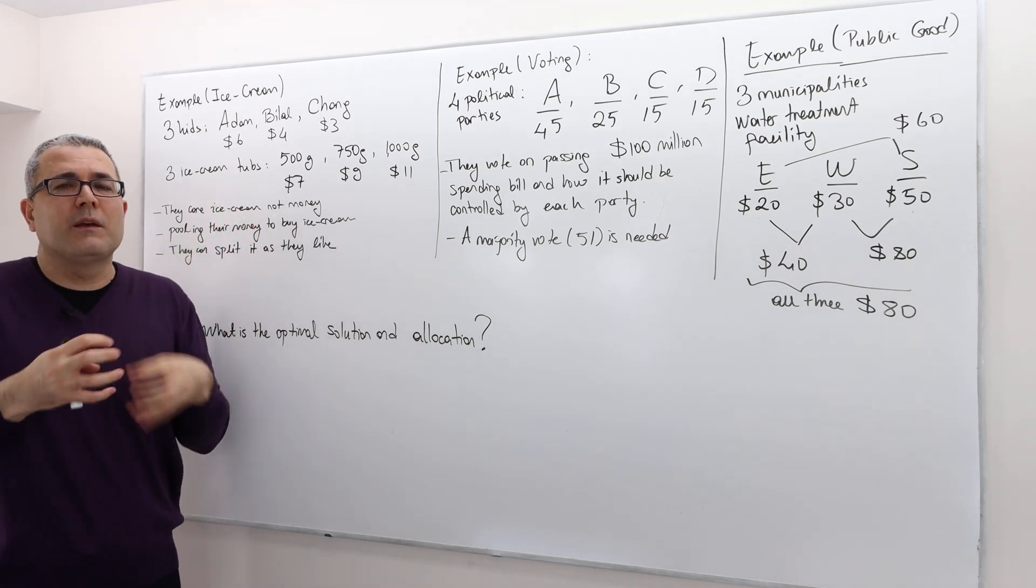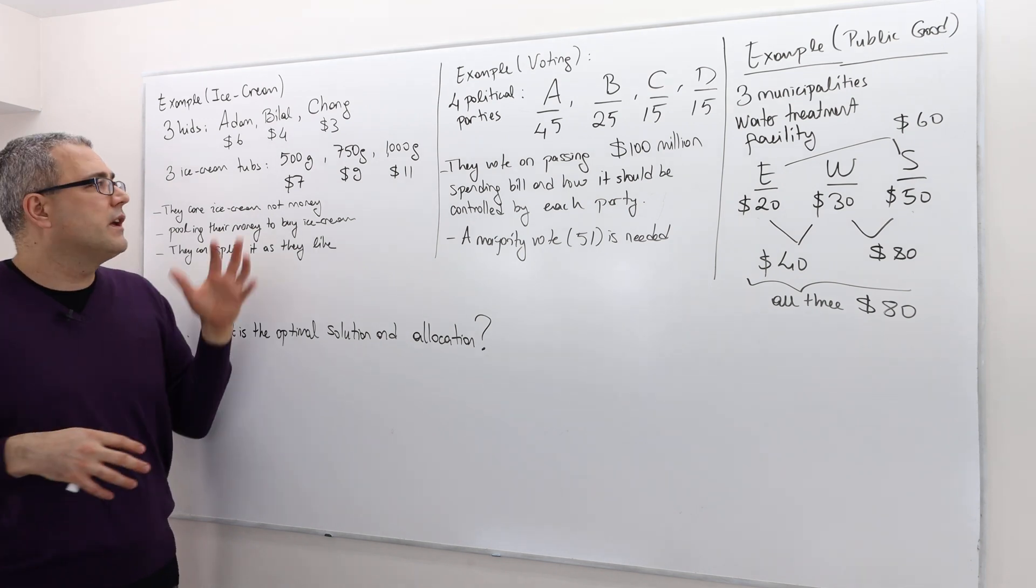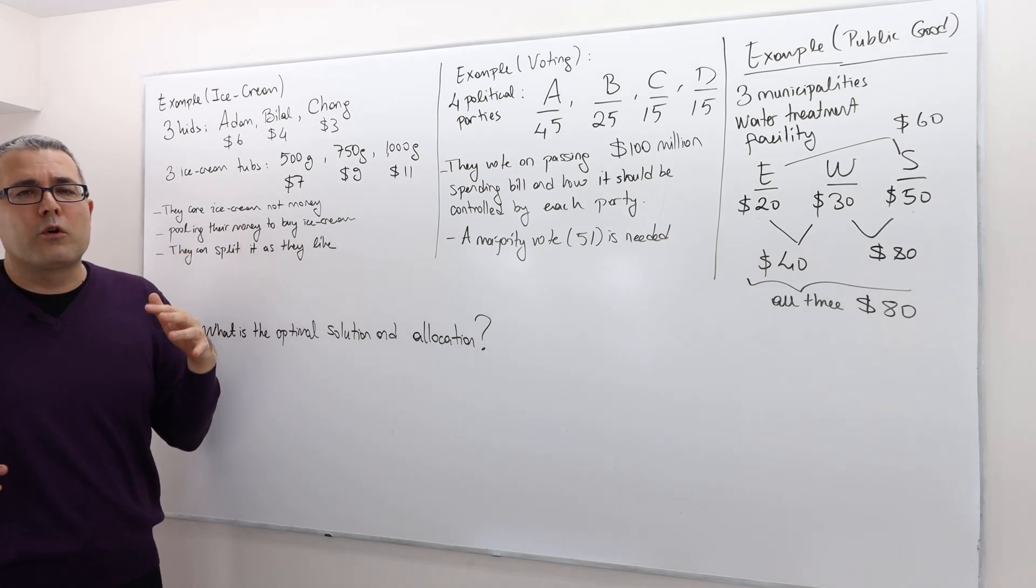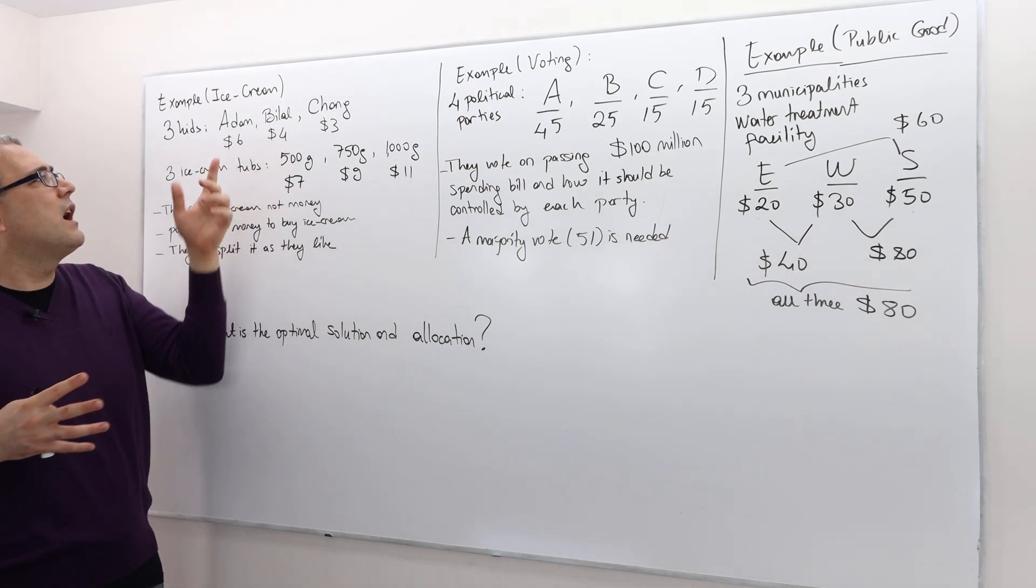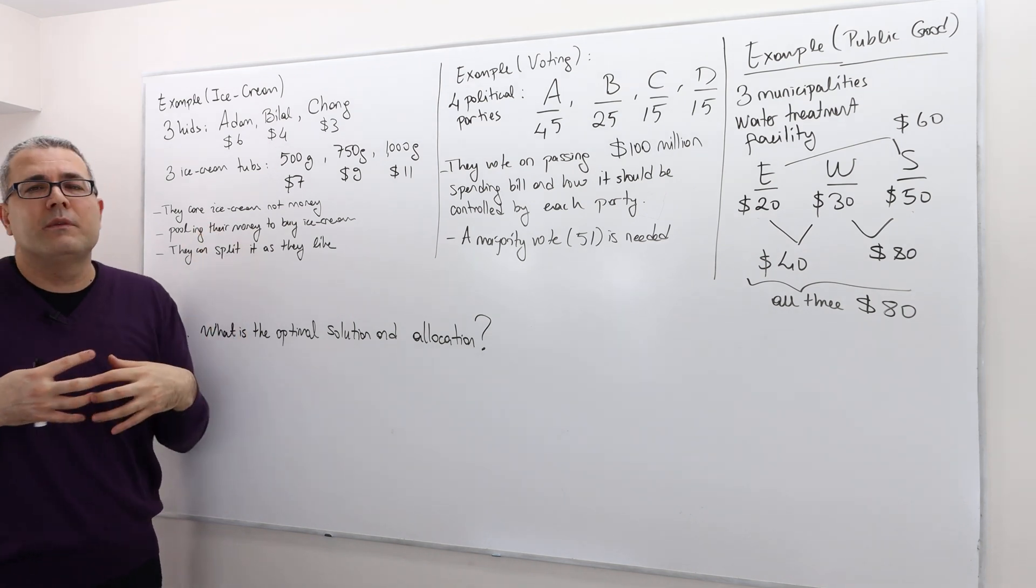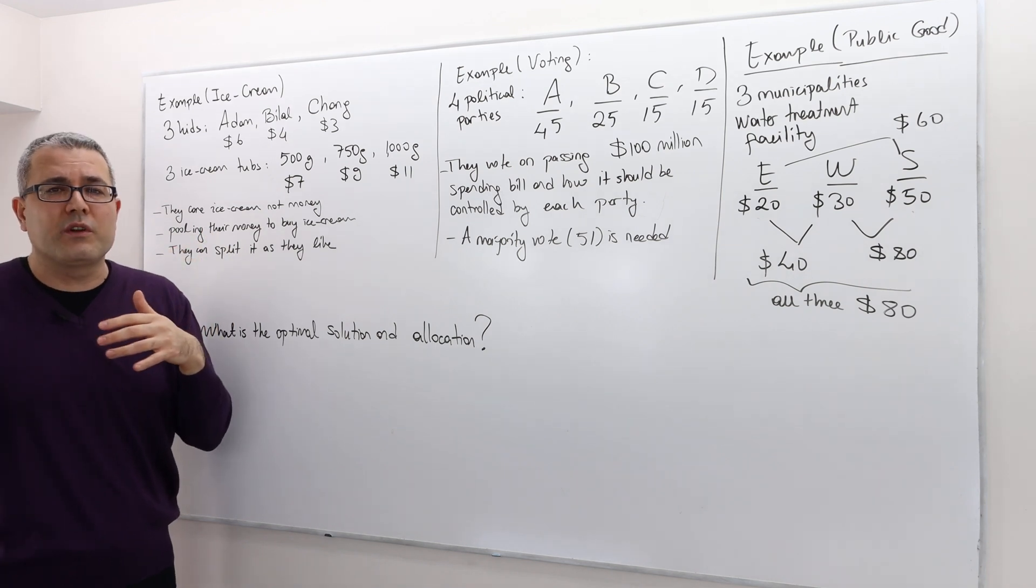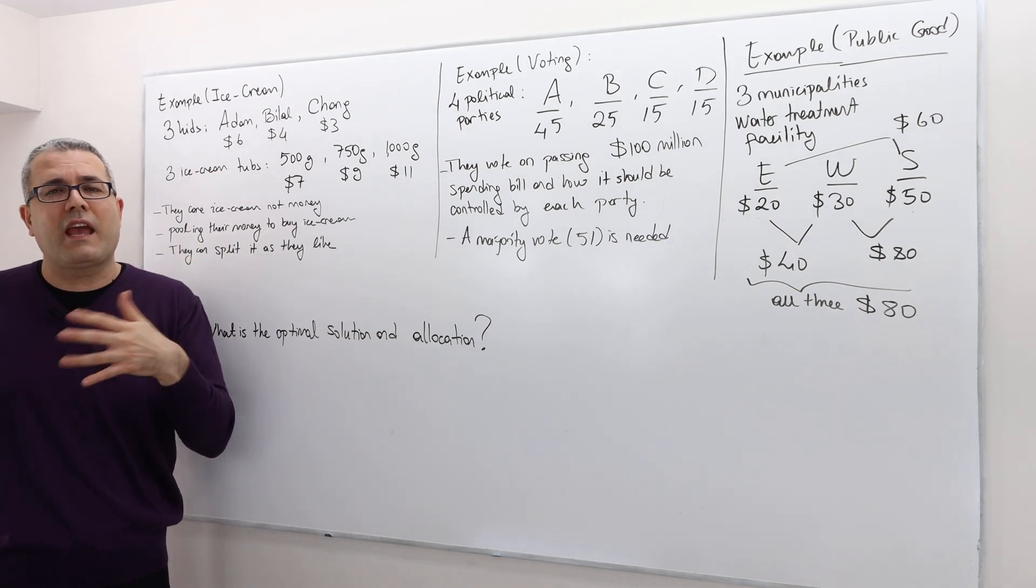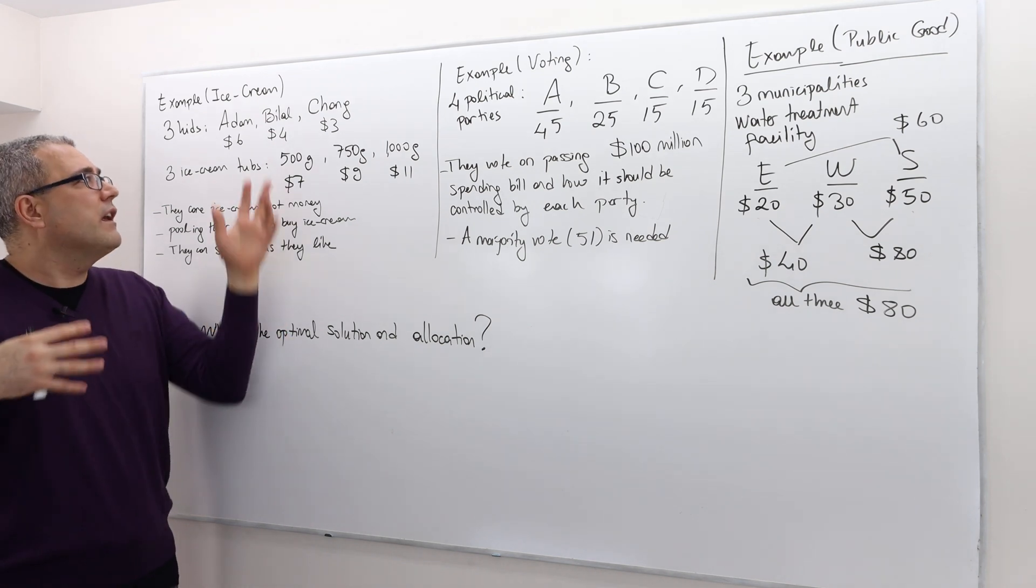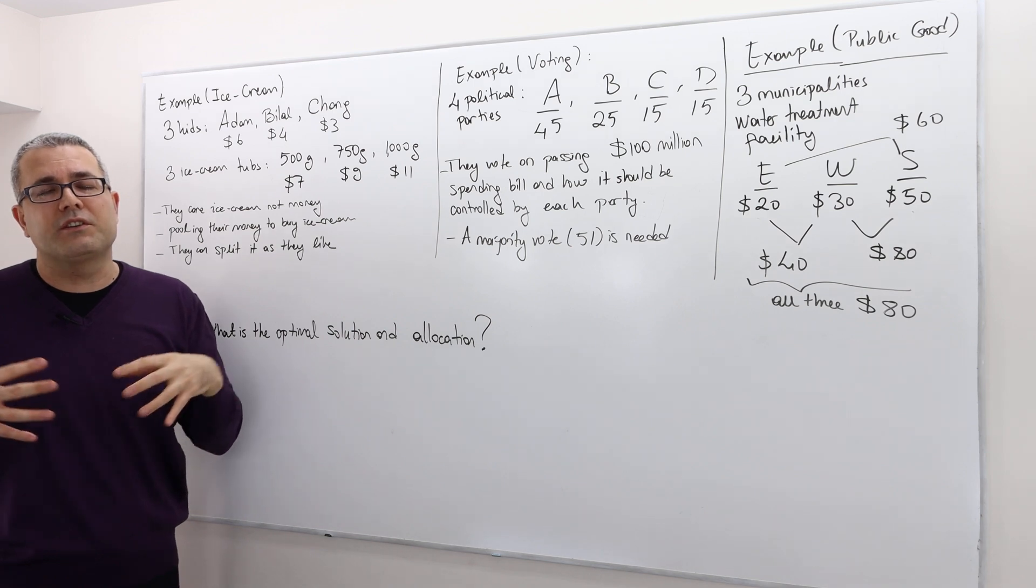So if they form some sort of a partnership, it's all voluntary, and obviously the incentives matter, right? Nobody forms - for example, Bilal is not going to form a coalition with Adam if Adam says I'm not going to give you anything. So maybe Bilal has more incentive to go to Chang and discuss how to split if they two join together and buy, for example, 500 grams of ice cream.